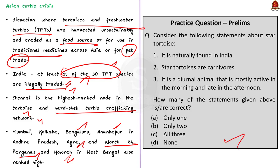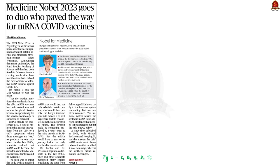In this discussion, we saw the difference between tortoises and turtles, the significance of tortoises and turtles, and some points about the Asian turtle crisis. With this, let us conclude this discussion and take up the next news article. The 2023 Nobel Prize in Medicine has been awarded to Hungarian biochemist Kathleen Kariko and American physician and scientist Drew Weissman. Their work enabled the development of effective mRNA vaccines against COVID-19.